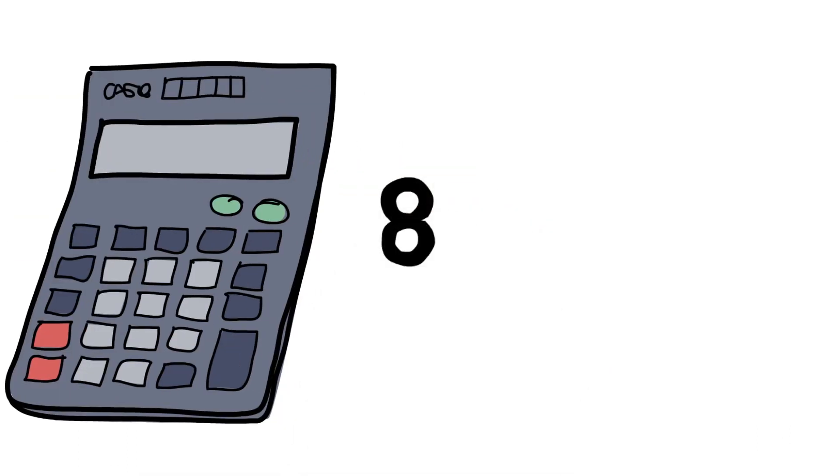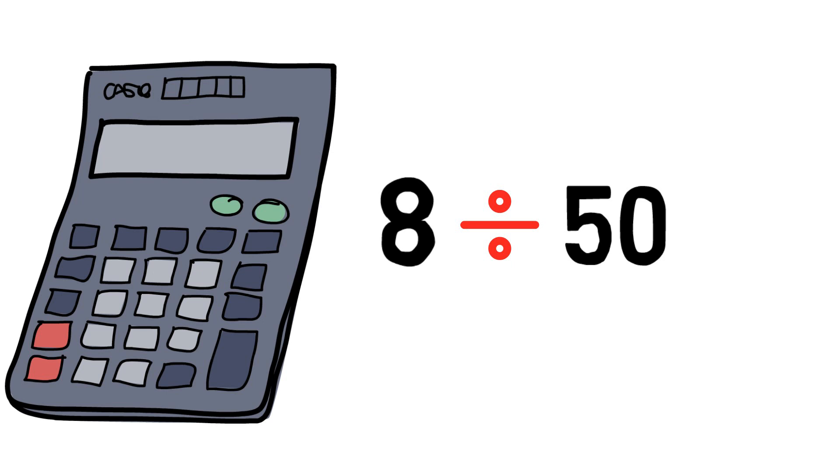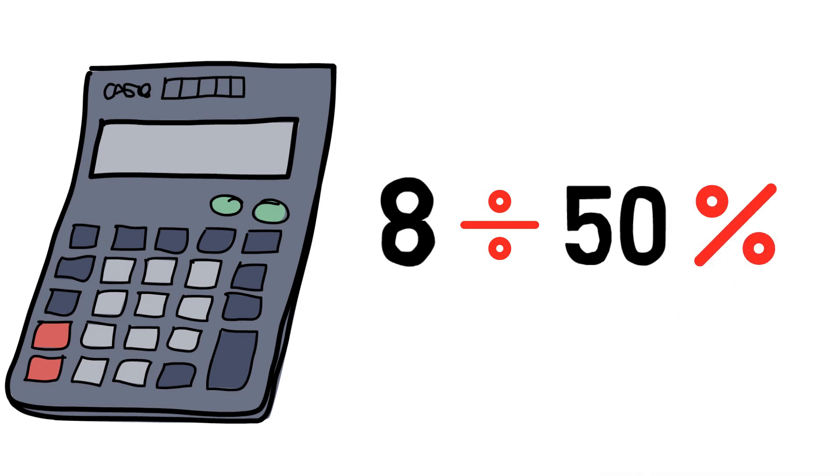So let's try this. Take the number 8, then hit divided by, and then hit the number 50. Rather than hitting your equals button, I want you to find the percent key and hit the percent key. If you do that, the number should flash up on your screen that says 16 for our answer of 16%.